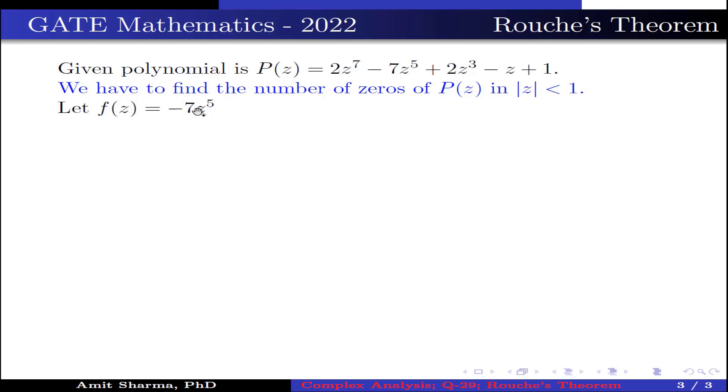Let us take f(z) = -7z^5 and g(z) = 2z^7 + 2z^3 - z + 1. Since f(z) and g(z) are analytic inside |z| = 1.